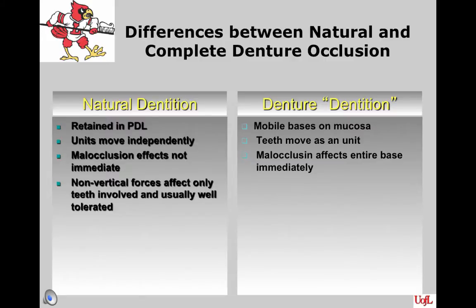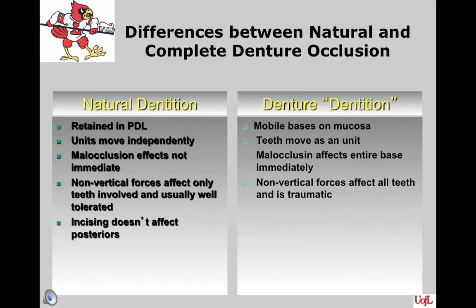Any non-vertical forces on the natural teeth are usually pretty well tolerated, whereas any kind of non-vertical forces against the denture teeth is very traumatic to the underlying tissues. Incising doesn't affect the posteriors in natural dentition, whereas if you incise on complete denture dentition, it's going to affect the denture base everywhere, and especially in that posterior area.